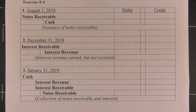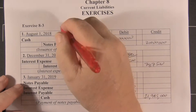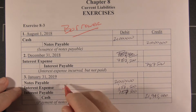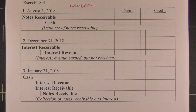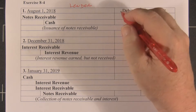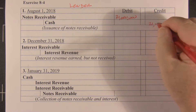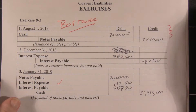Exercise 8-4 is the same exact problem as Exercise 8-3, except 8-3 is the borrower — the company that borrowed the money and will pay interest. This is the lender, and they will receive the interest. When the borrower recorded a notes payable and a cash inflow, the lender recognized a note receivable of $21 million and an outflow of cash of $21 million. It's the same transaction, but from the bank's point of view.